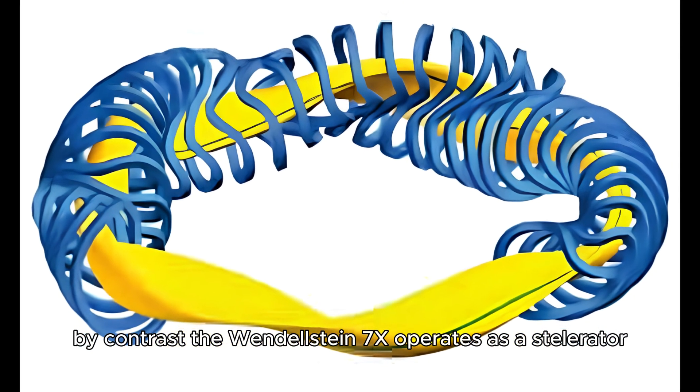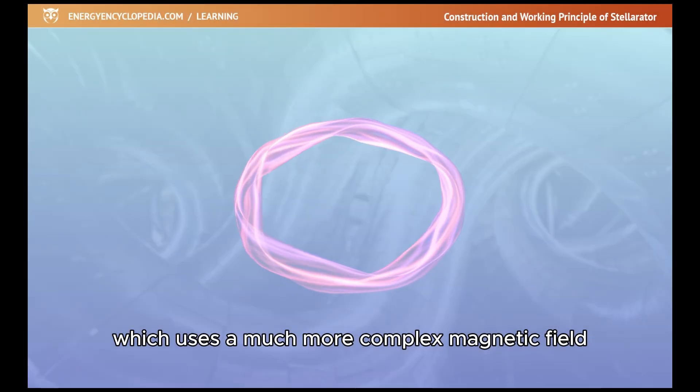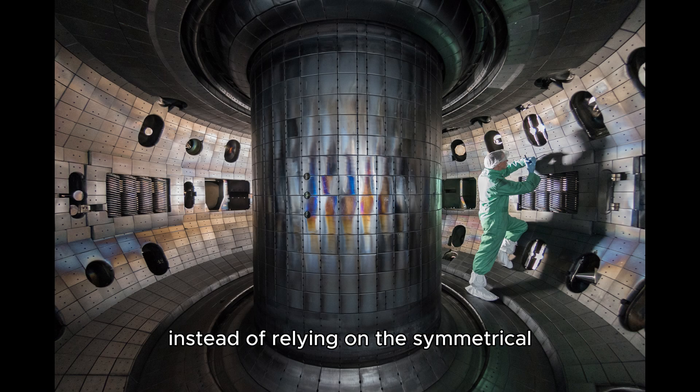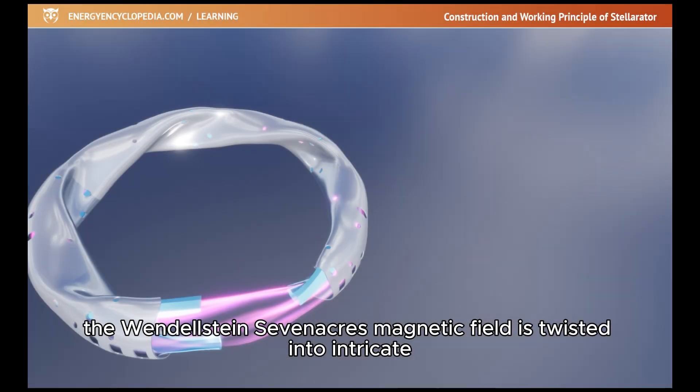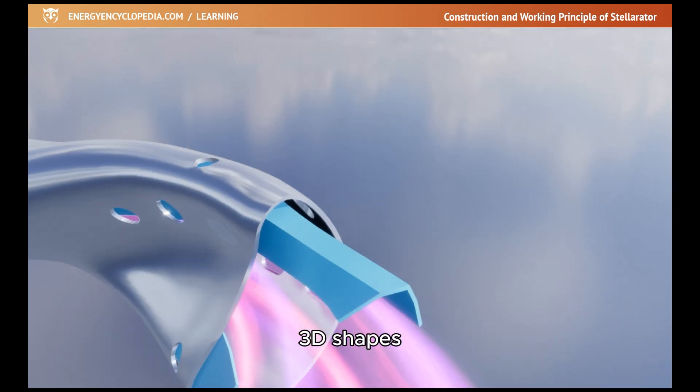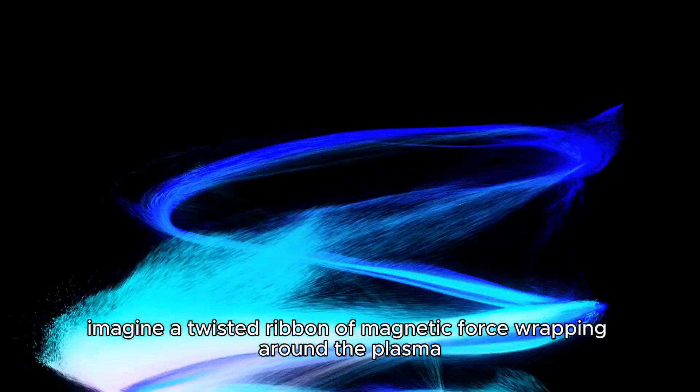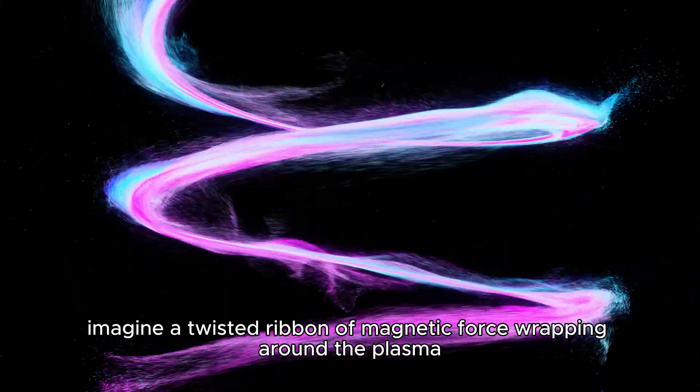By contrast, the Wendelstein 7X operates as a stellarator, which uses a much more complex magnetic field. Instead of relying on the symmetrical, donut-shaped field of a tokamak, the Wendelstein 7X's magnetic field is twisted into intricate 3D shapes. Imagine a twisted ribbon of magnetic force wrapping around the plasma.